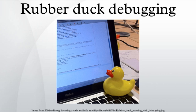By using an inanimate object, such as a rubber duck, the programmer can try to accomplish this without having to involve another person. This concept is also known as "talk to the bear," dating from Kernighan's 1999 book The Practice of Programming.